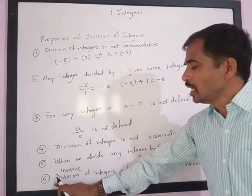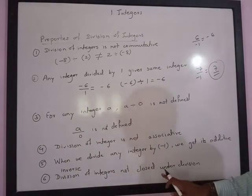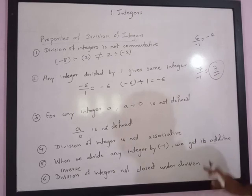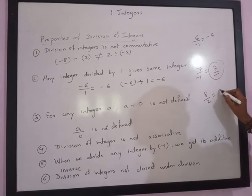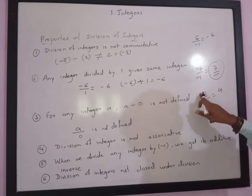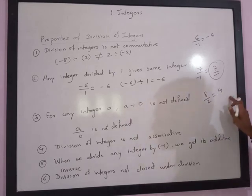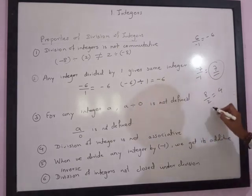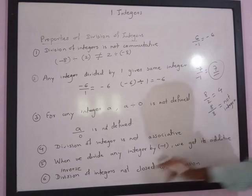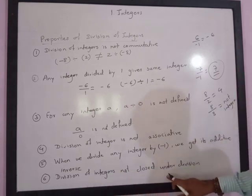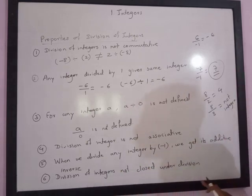The last property is that integers are not closed under division. For example, 8 divided by 2 gives an integer, so it seems closed. But 8 divided by 3 does not give an integer. Therefore, division of integers is not closed under division.